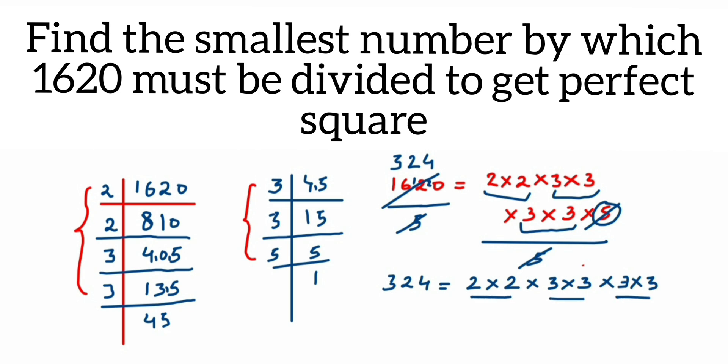So square root of 324 equals 2×3×3. From each pair, you take one factor and just multiply it. 2×3×3, which will be equal to 18.